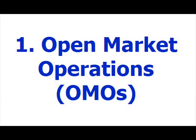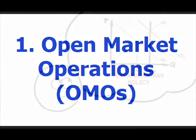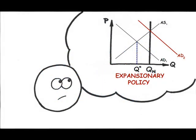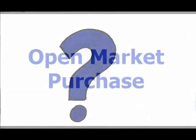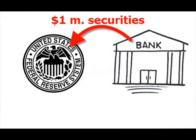Just as with fiscal policy, monetary policy can be either expansionary, stimulating the economy, or contractionary, slowing the economy. If open market operations are the buying and selling of government securities, which is expansionary and which is contractionary? Let's look at an example of an open market purchase, where the Fed buys $1 million of securities, or government bonds, from Wells Fargo.